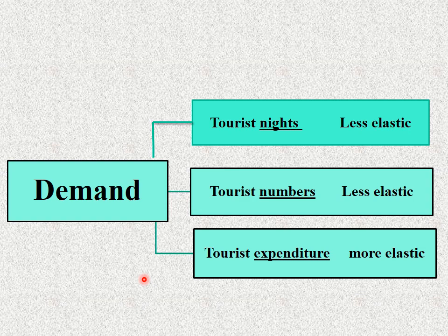مثال عملي: لما دخلنا محدود كنا بنروح جمصة، أسبوع مصيف، الأسرة أربع أفراد. لما دخلنا بقى عالي، مش هنروح جمصة anymore، هنروح الجونة، بس هنفضل أسبوع وإحنا أربع أفراد. يبقى الـ elasticity واضحة قوي في الـ expenditure وأقل وضوحاً في الـ nights والـ numbers.